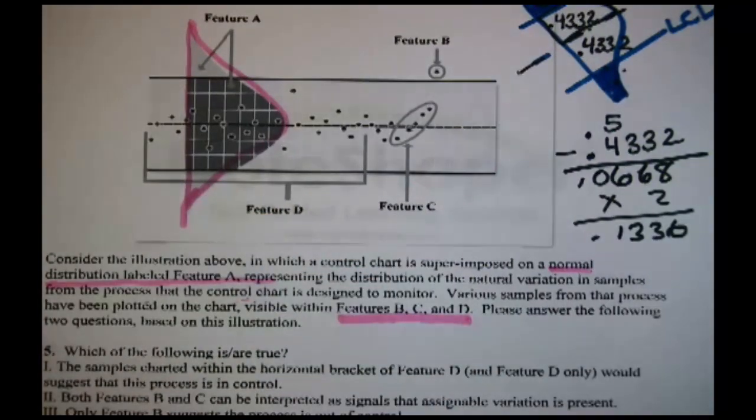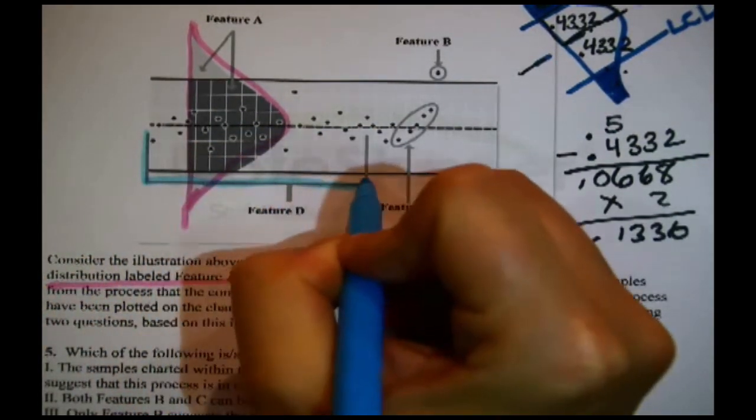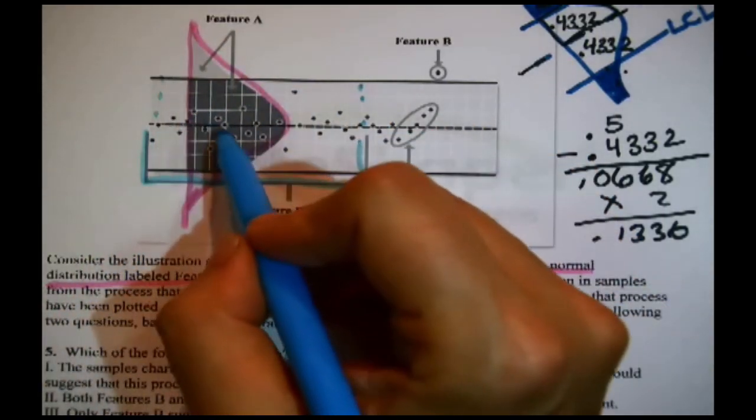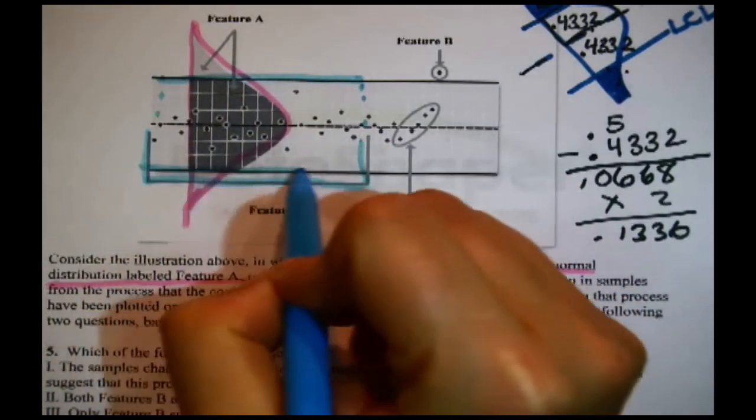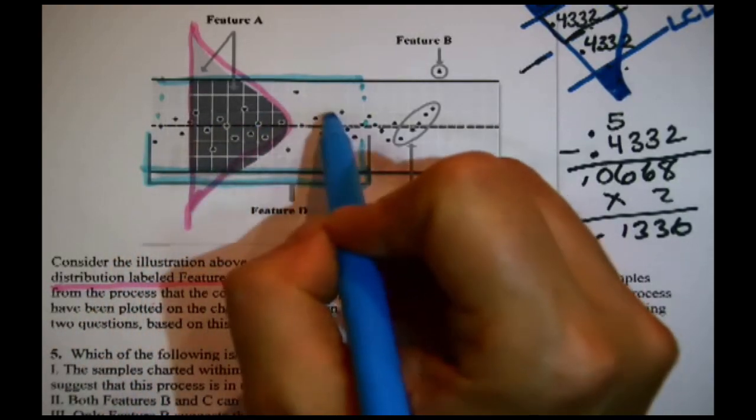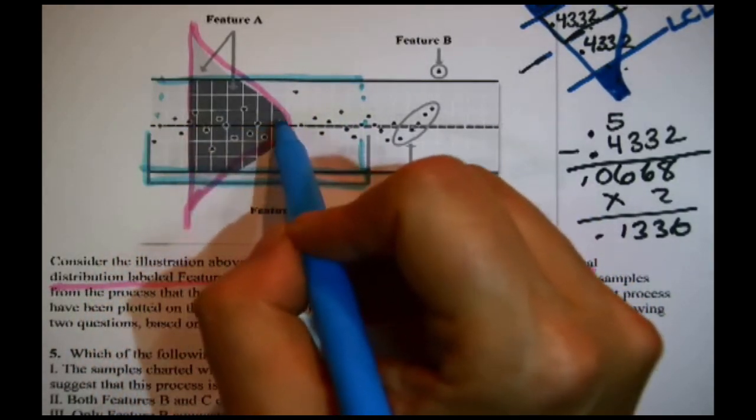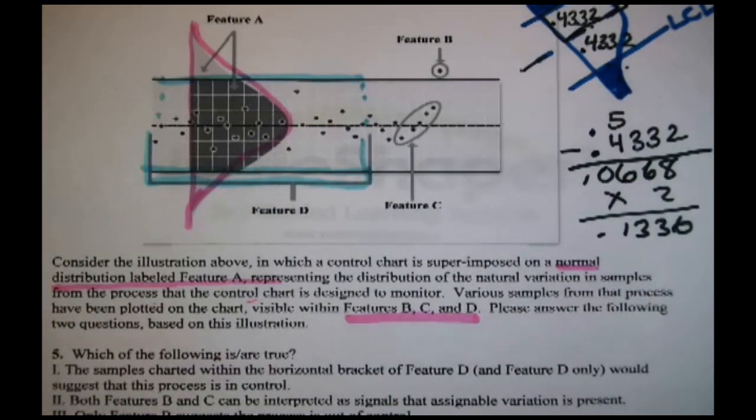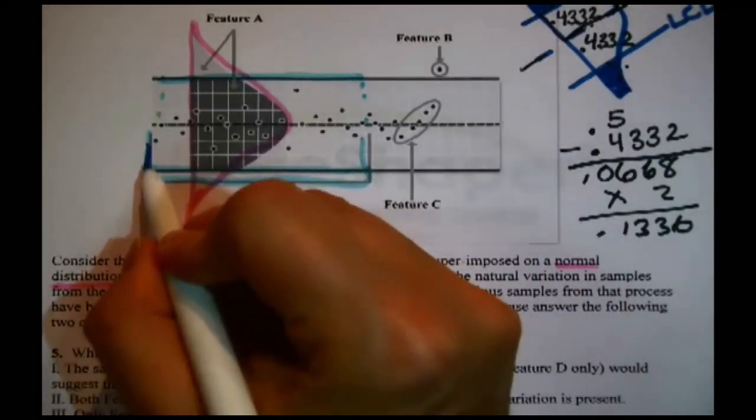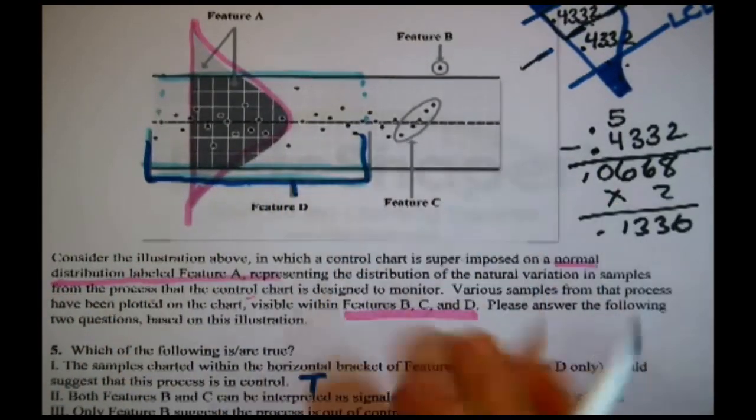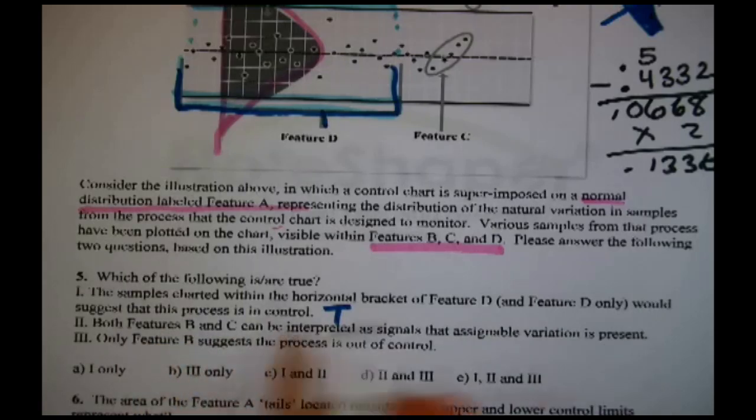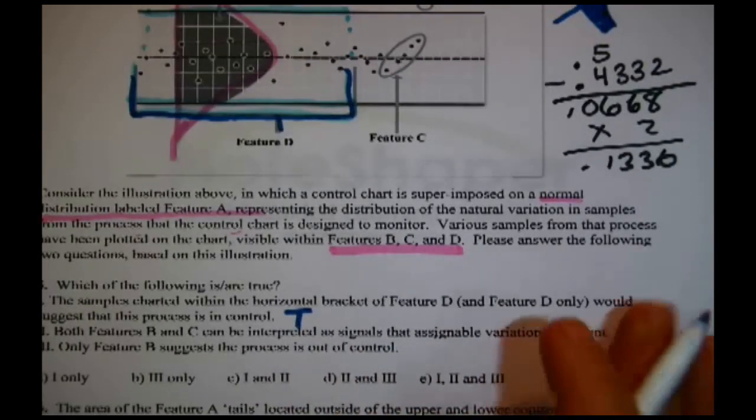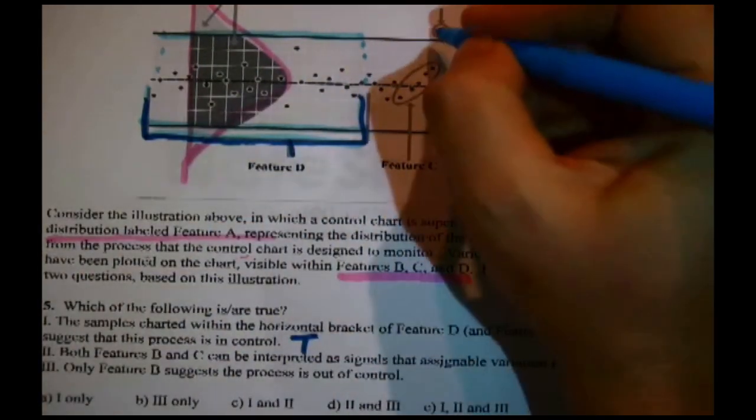This is essentially triple true false, this next question. Let's take them one at a time. The samples charted within the horizontal bracket of Feature D and Feature D only would suggest this process is in control. So I need to find Feature D. It's right here. And it's a bracket indicating all the samples from basically like from here to here. I'm looking for two things. One, they're all within the limits because that's the original limits of the control chart. And other than that, I don't see anything particularly interesting. I don't see any patterns or design. That is indicating only random variation. And if we're only talking about from here to here, Feature D, yeah, we would say that that's in control.